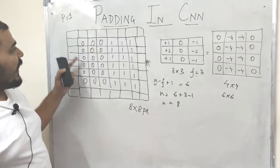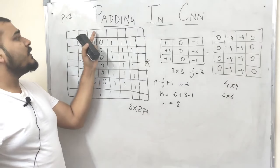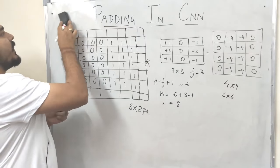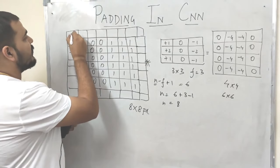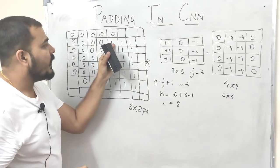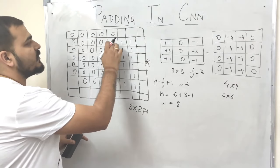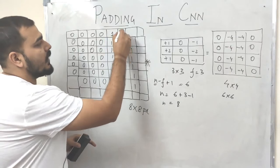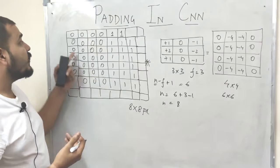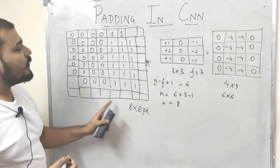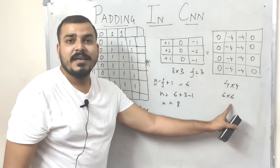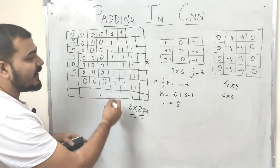Now with eight cross eight pixels, I have eight rows and eight columns. There are two types of values you can fill in this padding. One is zero padding, where you simply insert zeros everywhere. The other technique is to find the nearest neighbor value and insert that — for example, if one is your neighbor you put one, if zero is your neighbor you put zero. The most commonly used practice is zero padding, where you fill everything with zeros.